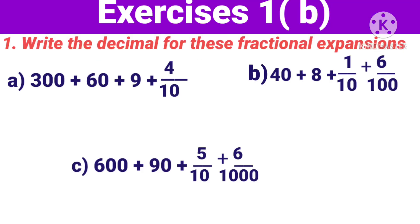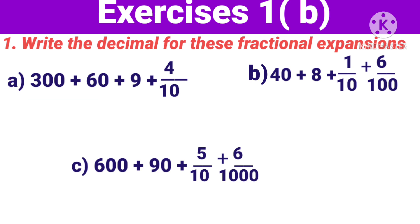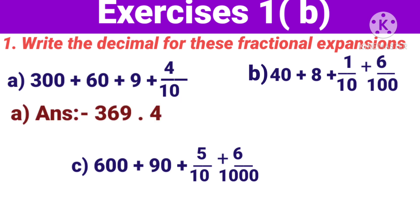Now next section: Write the decimal for these fractional expansions. Yahaan par number expand kara hua hai, jisko hume point laga kar decimal form mein likhna hoga. Toh chaliye — three hundred plus sixty plus nine plus four by ten. Chaliye, isme aap bataiye: whole part kaunsa hai aur fractional part kaunsa hai? Yes, very good — three hundred plus sixty plus nine aayega whole part mein, aur four by ten aayega fractional part mein. Yani: three hundred and sixty nine point four. Matlab four by ten start ho raha hai, toh hume wahaan par point lagana chahiye. So, 369.4.